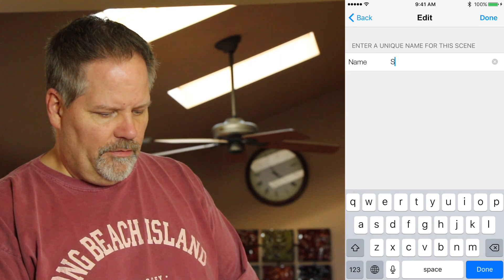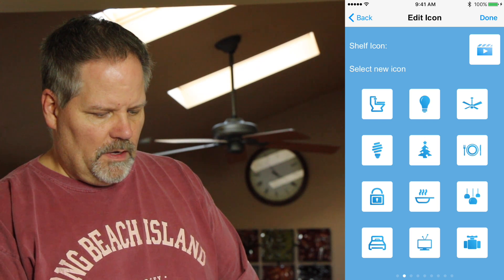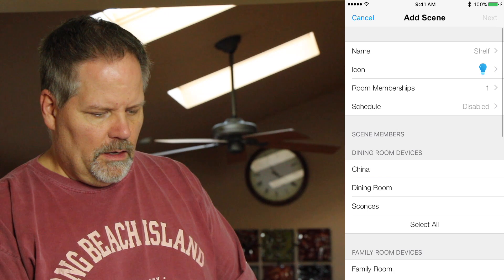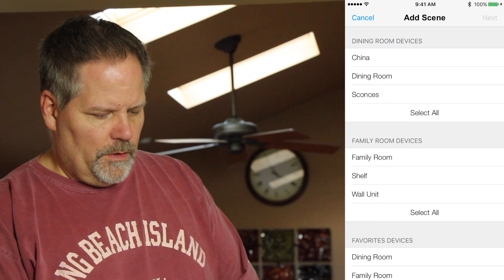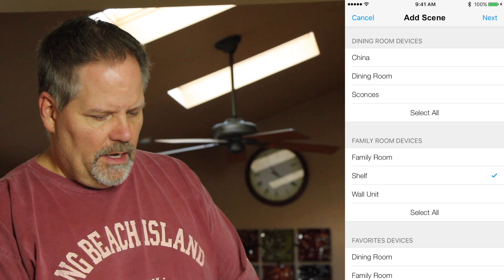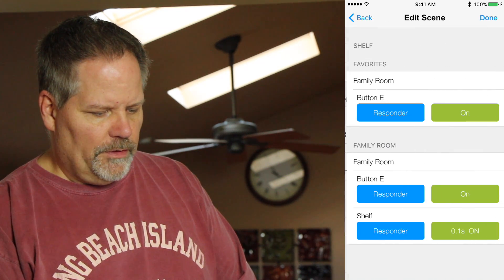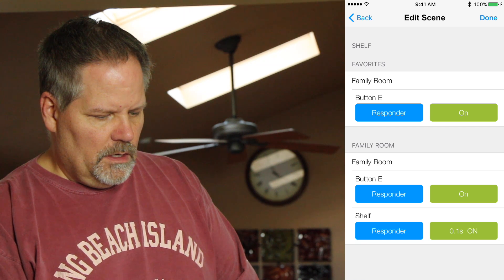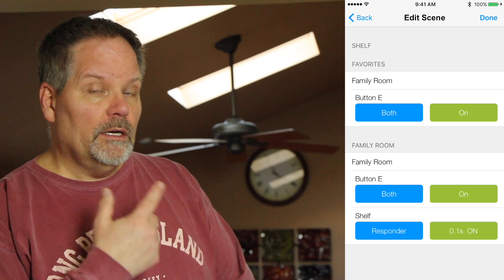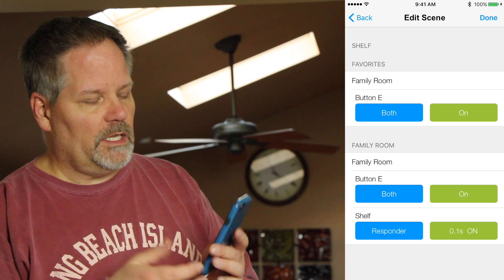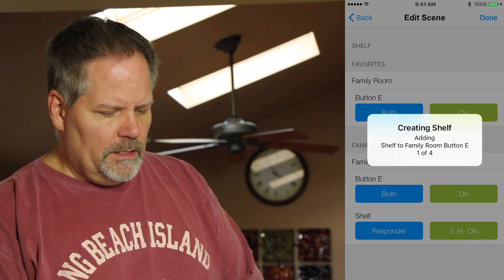I'm going to call this scene shelf. And let's give it an icon. I'm just going to give it an icon of a light bulb. It's in my family room. And I'm going to select the shelf as a device and the family room keypad dimmer. And I want it to be the third one down. Button E is going to control that. Now, you can see family room button E, I'm going to set to both because that has a lighted button. And I want that light to go on if I turn on the scene from my phone. That's what the light will do. That's what it says both for. And the responder, the shelf is just a responder. And I click done and it creates that scene for me.